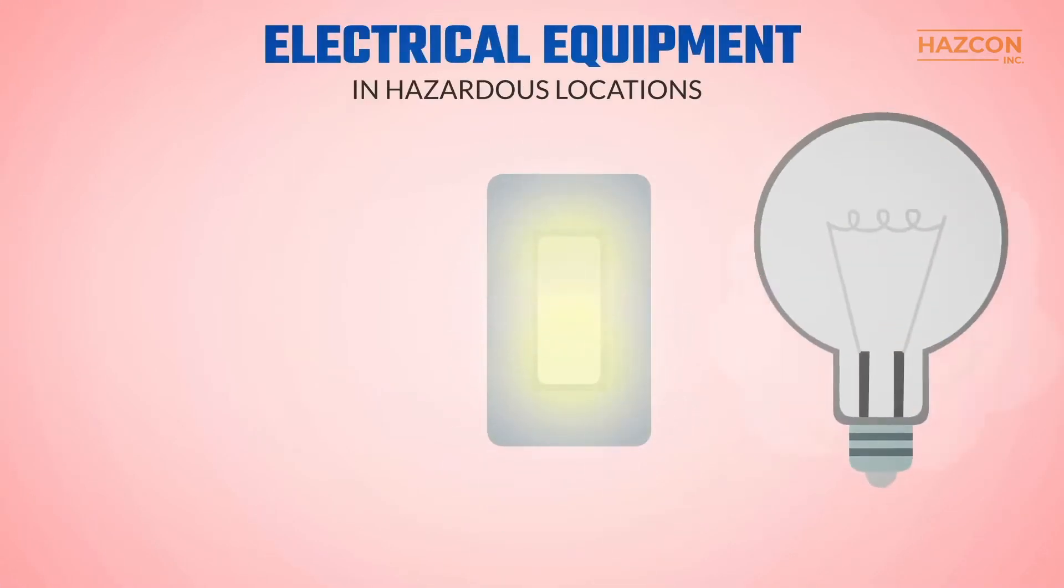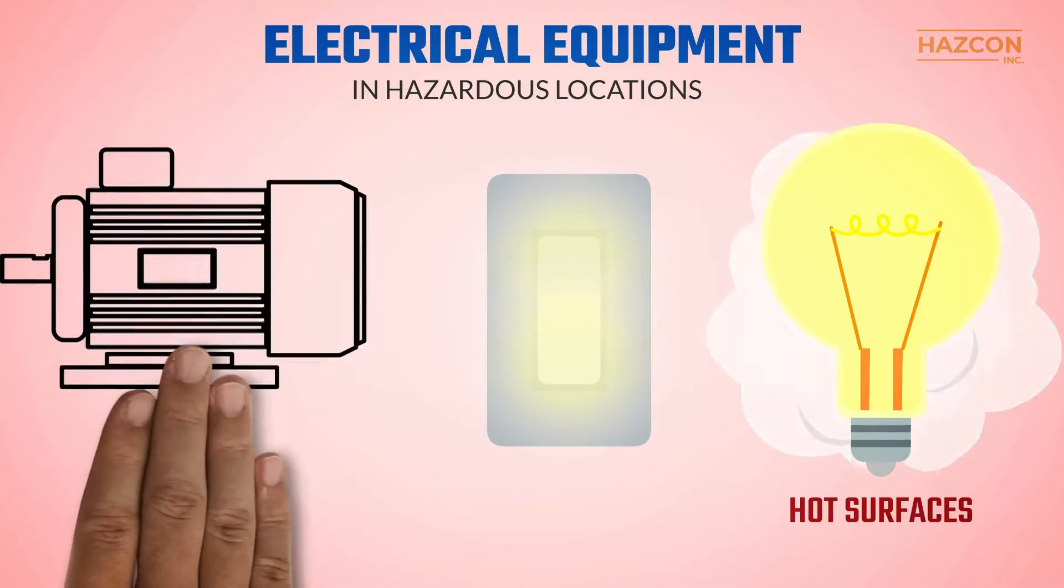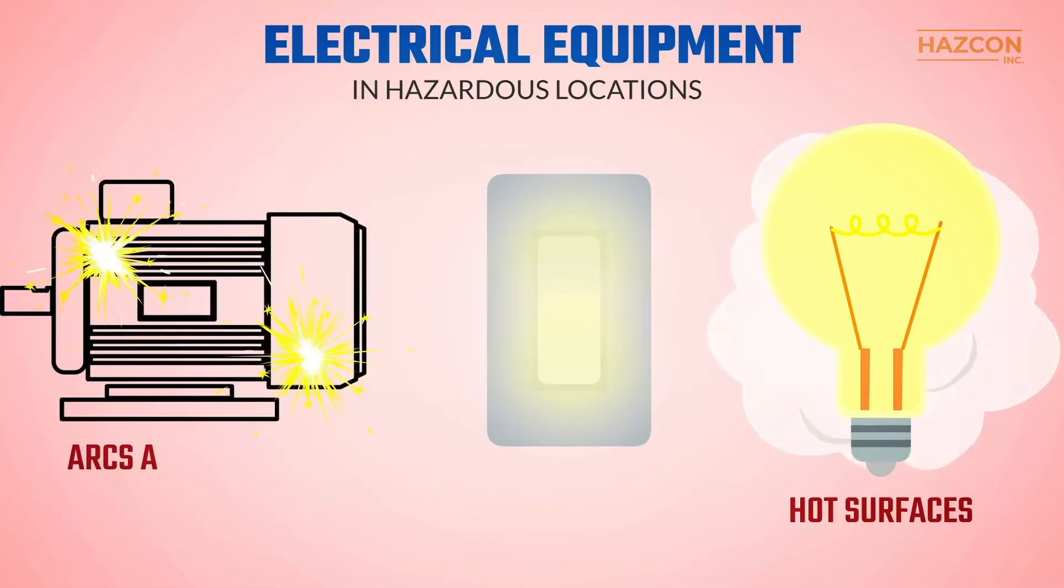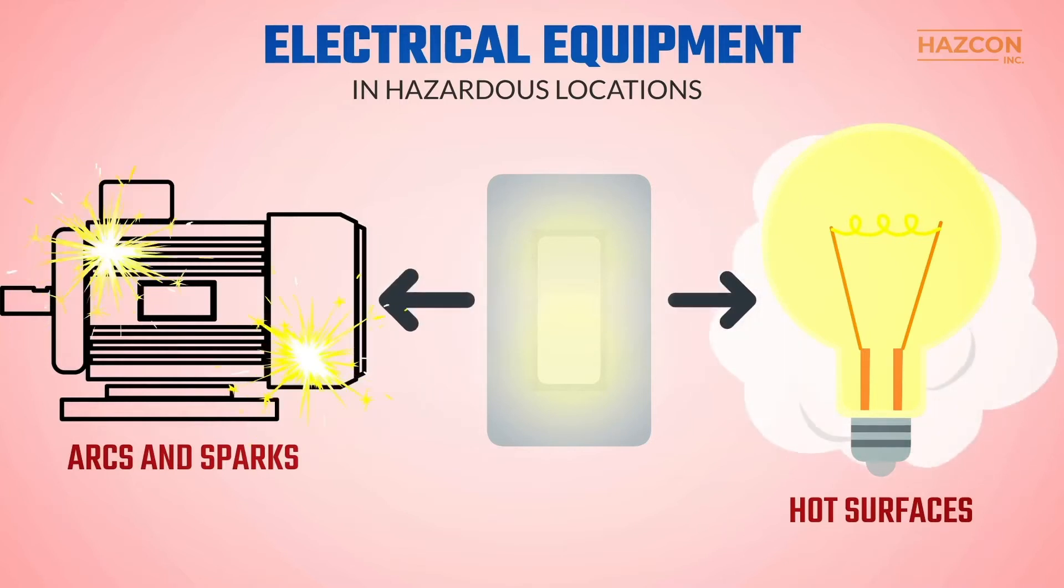Electrical devices need to be used in hazardous locations. These devices can become sources of ignition. They generate heat and in some cases arcs or sparks under normal operating or fault conditions. When an explosive gas makes contact with a source of ignition, an explosion can result.